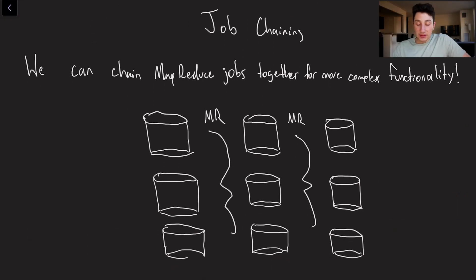Okay, finally, let's talk about job chaining. So as of now, we can just have one mapper function and one reducer function. But what if we want more advanced functionality than that? Well, keep in mind that every single MapReduce job is literally just going from data on disk to different data on disk.